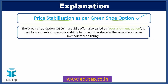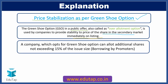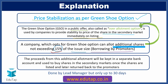In a public offer, the green shoe option is used by companies to provide stability to the prices of shares in the secondary market immediately after listing. A company that opts for the green shoe option can allot additional shares not exceeding 15% of the issue size, and these shares are borrowed from the promoters. For example, if the issue size is 100 crore, not more than 15 crore can be additionally allocated. This is why it is also called the over-allotment option. The proceeds from the additional allotment are kept in a separate bank account, used to stabilize share prices in the secondary market, and after 30 days, this money is returned to the promoters. The whole process is managed by the lead manager.